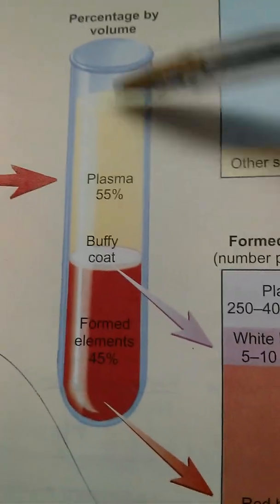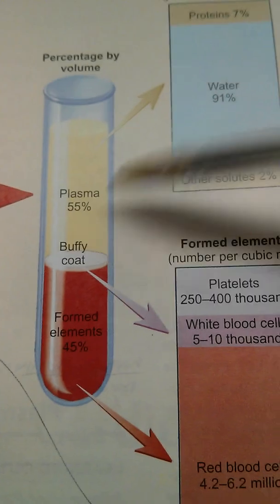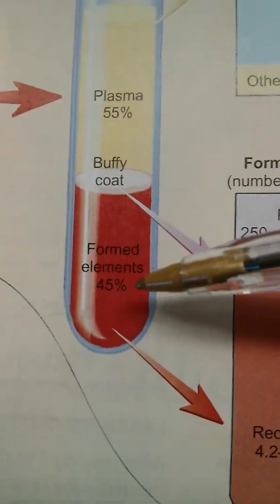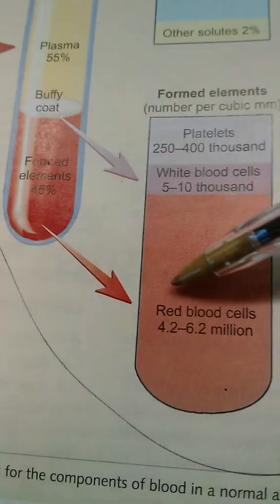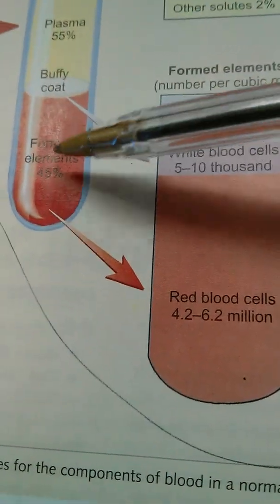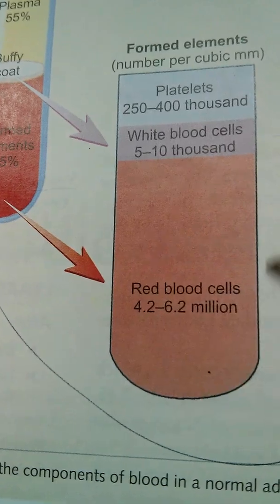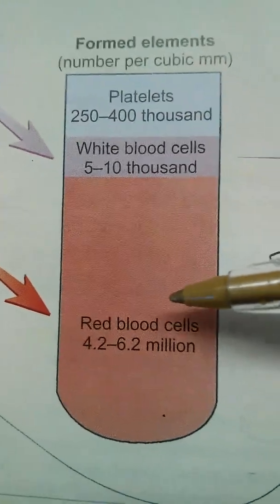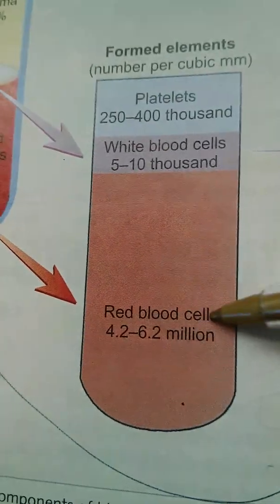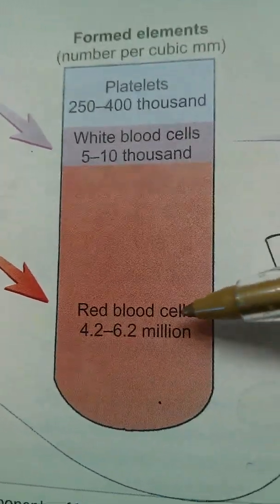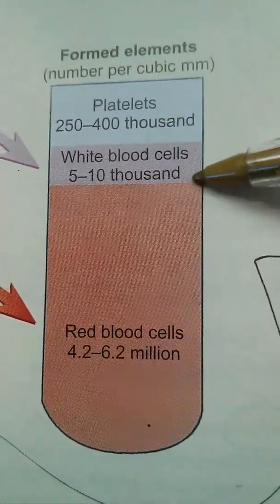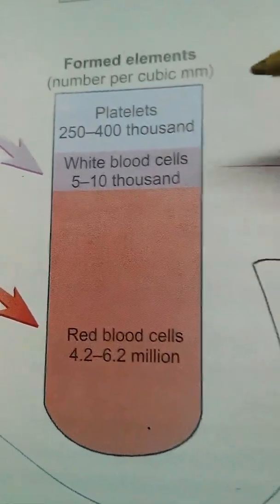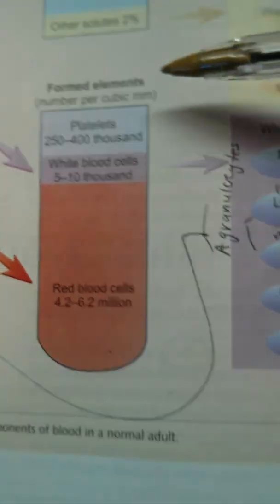So 55% of blood is mostly water and some proteins. The other part is the formed elements. Most of the formed elements are actually red blood cells, which is why your blood appears red — red blood cells have that red pigment to them. You also have white blood cells and platelets. These are the three formed elements, or the key players in your bloodstream.